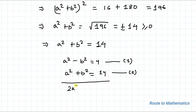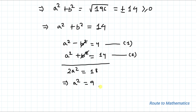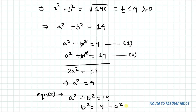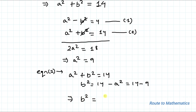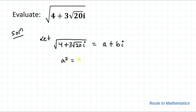Adding equation 1 and equation 2: the B² terms cancel, giving 2A² = 4 + 14 = 18, so A² = 9. Substituting A² = 9 into equation 2: B² = 14 - 9 = 5. So we have A² = 9 and B² = 5.